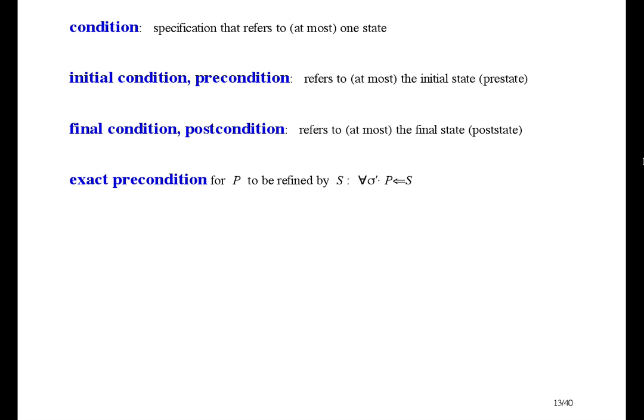The exact precondition for specification p to be refined by specification s is this formula, which is exactly the same as the refinement formula, except refinement says for all pre-states sigma and post-states sigma prime, p is implied by s, and this formula just quantifies over post-states sigma prime.